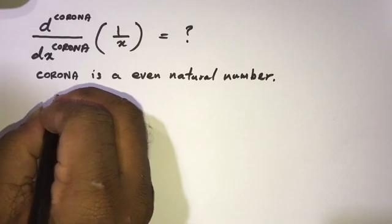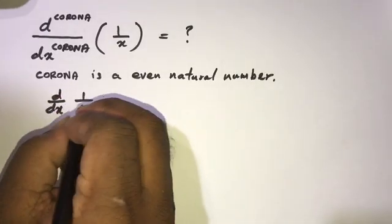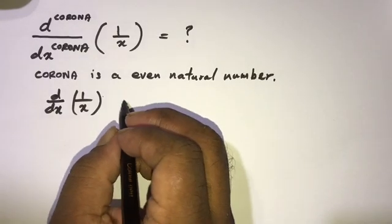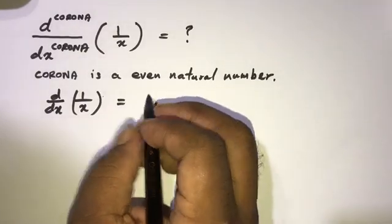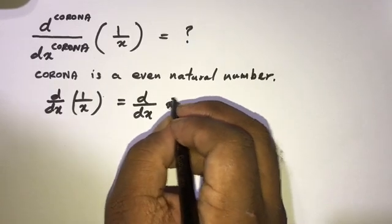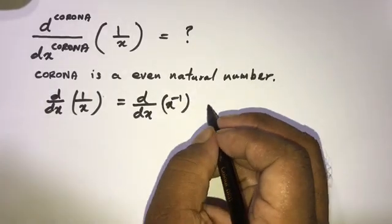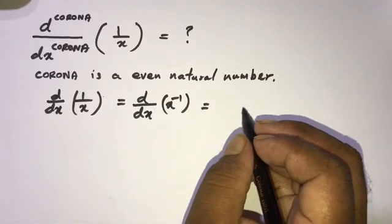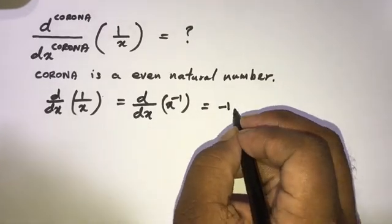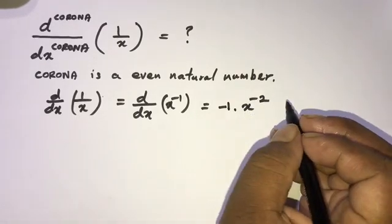First, let's take the first derivative of 1 over x. We can write this as d/dx of x to the minus 1 power. According to the power rule, this equals minus 1 times x to the minus 2 power.